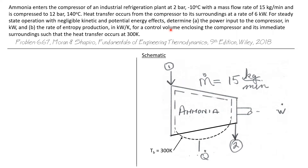What it said here is that the control volume encloses the compressor and its immediate surroundings such that the heat transfer occurs at 300 degrees Kelvin. If we draw our boundary around the ammonia in the compressor, the system boundary extends somewhat into the immediate surroundings. It's at this boundary line where the heat transfer takes place. Heat transfer in our energy balance occurs at the system boundary, and at this boundary, the temperature at which the 6 kilowatt heat transfer occurs is 300 degrees Kelvin. So T sub B for the boundary is at 300 degrees Kelvin.